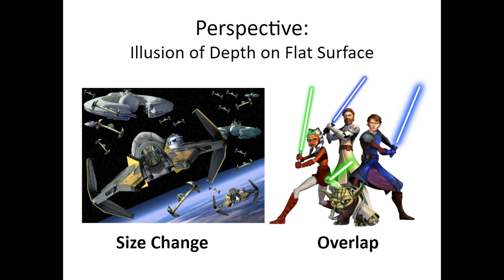In reality, these two spaceships are identical in size, but we know this one is closer because it's bigger, and this one is smaller because it's further away. All of these other spaceships are also the exact same size in reality, but because of their variety of sizes, we know their distance — same as these larger ships as well.